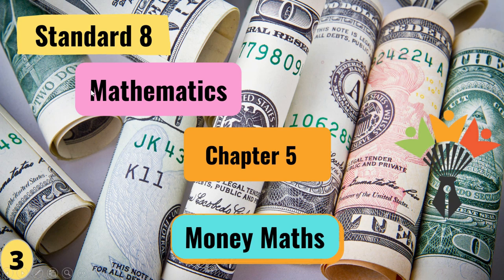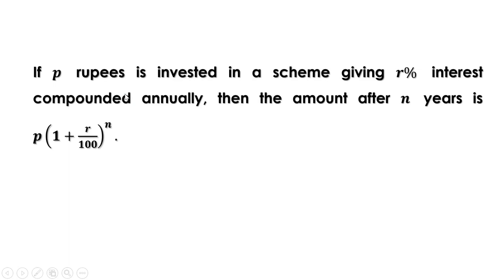In the last video, we discussed the section 'Another Method'. We have seen that if P rupees is invested in a scheme giving R% interest compounded annually, then the amount after N years is P into (1 plus R by 100) all raised to N.